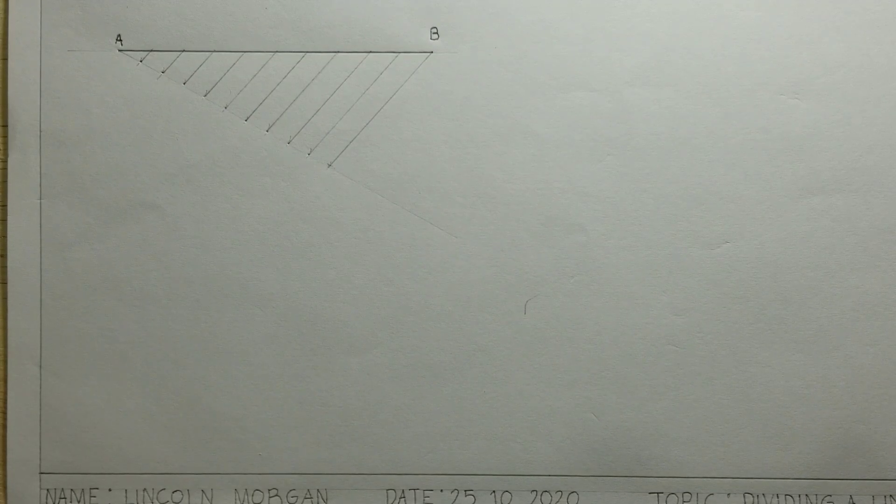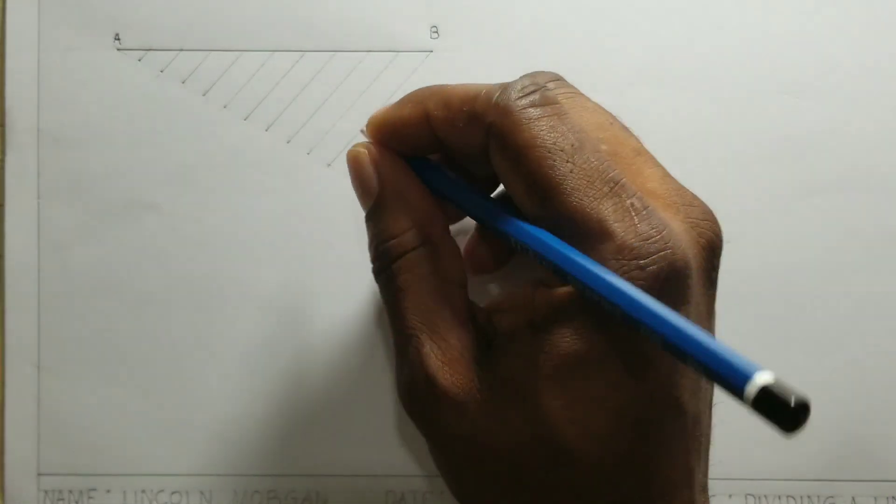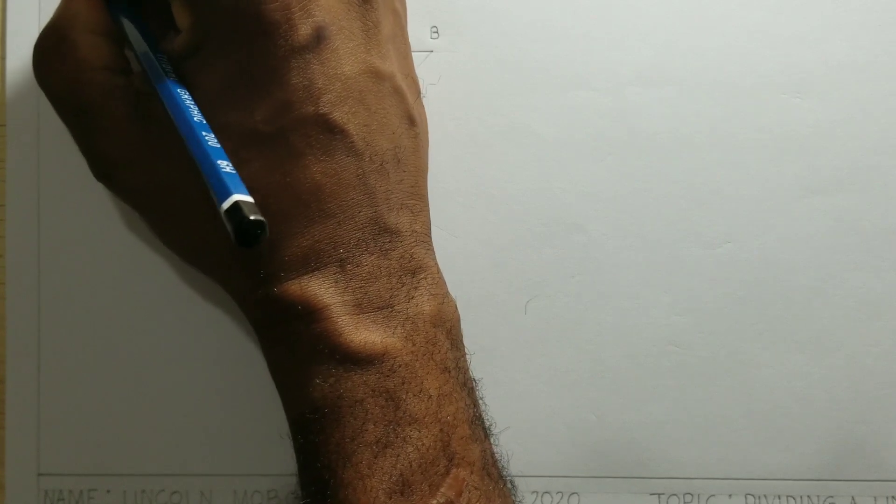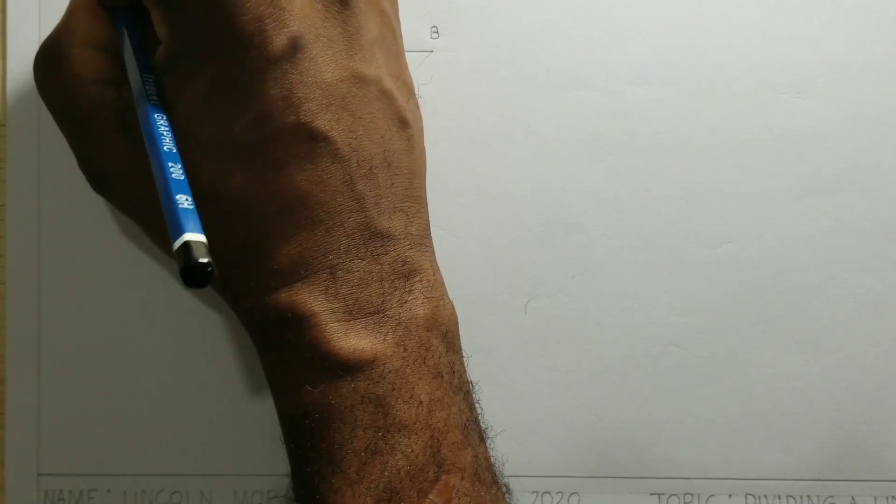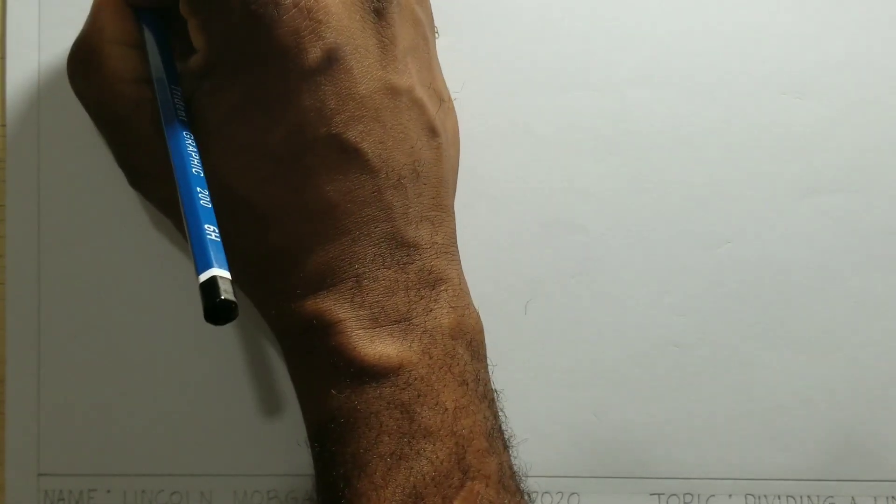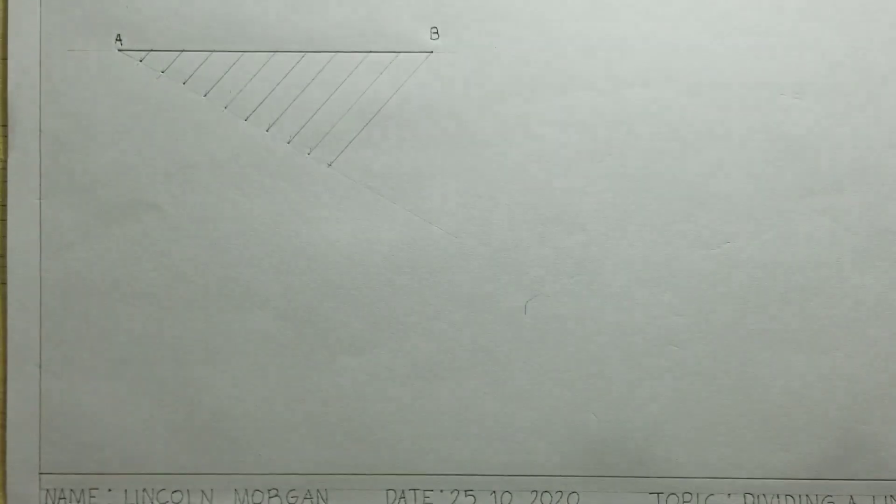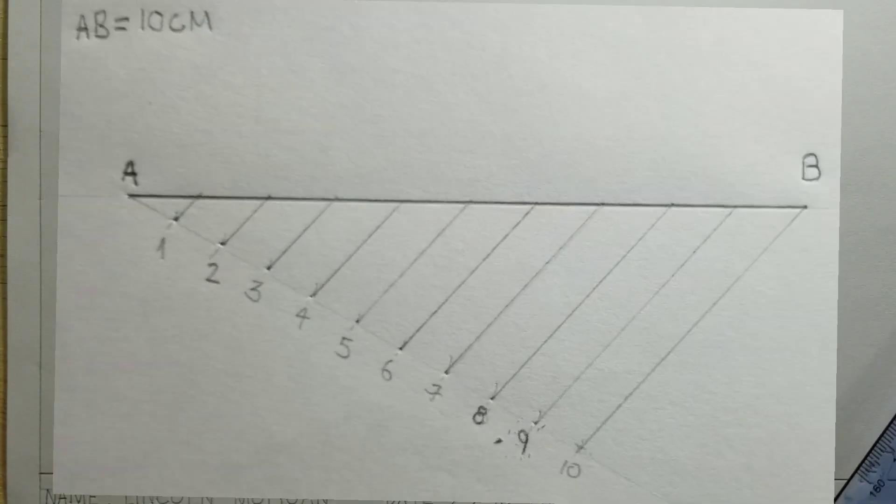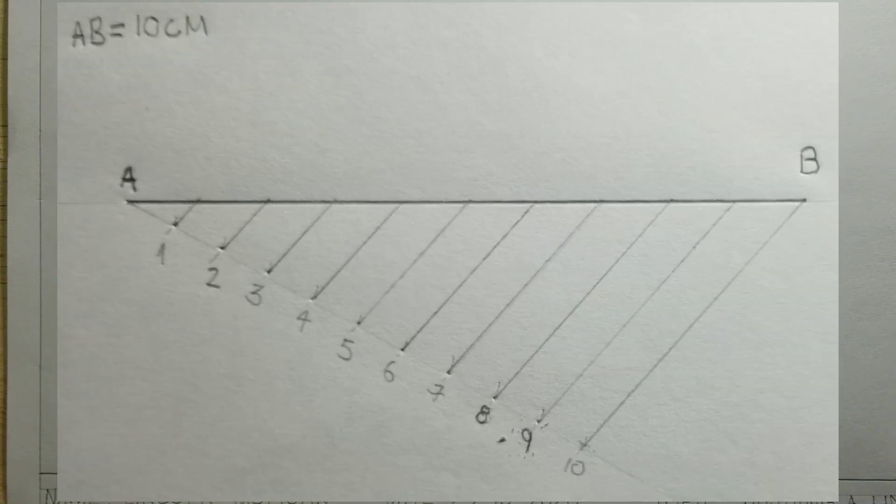So, AB equals 10 centimeters. Now, this is exactly how we divide a line into equal parts.